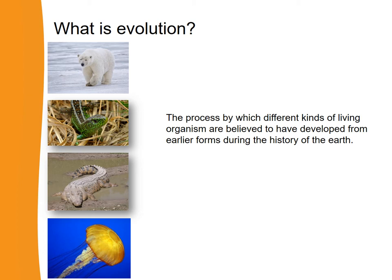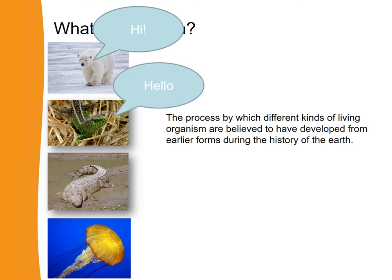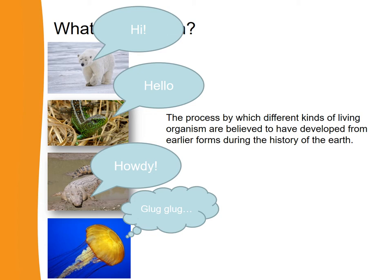Now let's look at four pictures and think about how animals have evolved. First, let's do a bit of revision on adaptations. What adaptations does a polar bear have? What adaptations does a sand lizard have? What adaptations does a crocodile have? And what adaptations does a jellyfish have? Well, the polar bear has thick fur, meaning it can live somewhere cold. The sand lizard is cold-blooded, so it can eat less often because it warms itself in the sun. The crocodile has a long thick tail that helps it swim, and the jellyfish can move around the ocean.